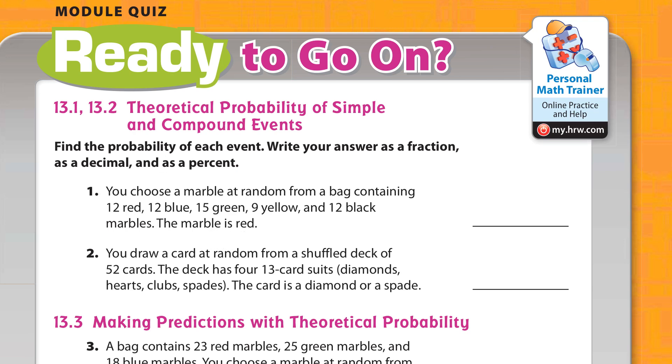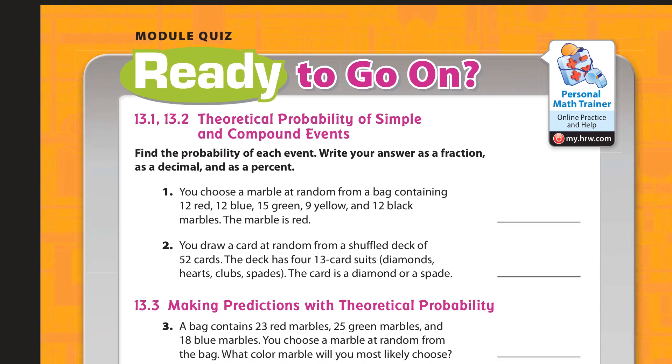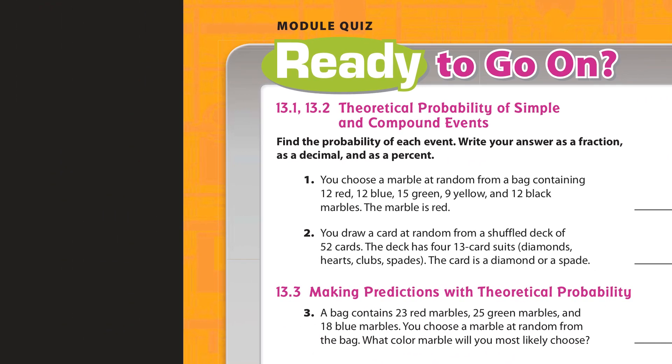First, we have to know what is the total of all of these numbers. So let me take this here. Let's see, we got 12 plus 12, and there's 15 and 9 and 12. Okay, so that's 14, 16, 18, 20. So that's 20, two, three, four, five, six. So it looks like our total is 60.